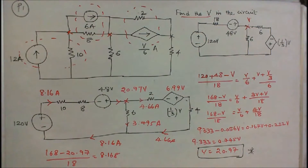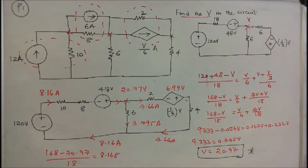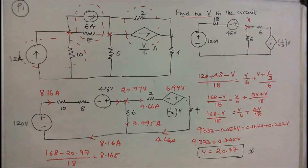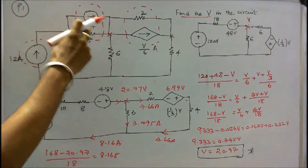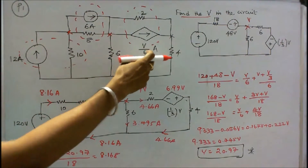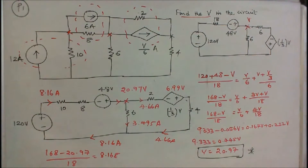In this class we work out five problems on nodal voltage analysis. Problem number one: two independent current sources and one dependent current source, and four resistors are connected as shown in figure. Find V in the circuit. Here this is 12 amps, this is 6 amps, and this is V by 6 amps. This is a dependent current source.